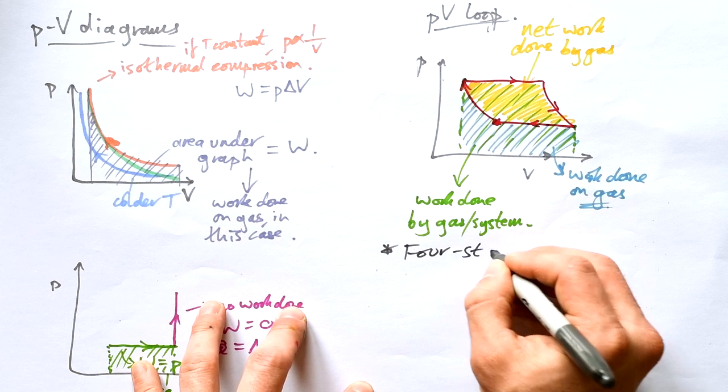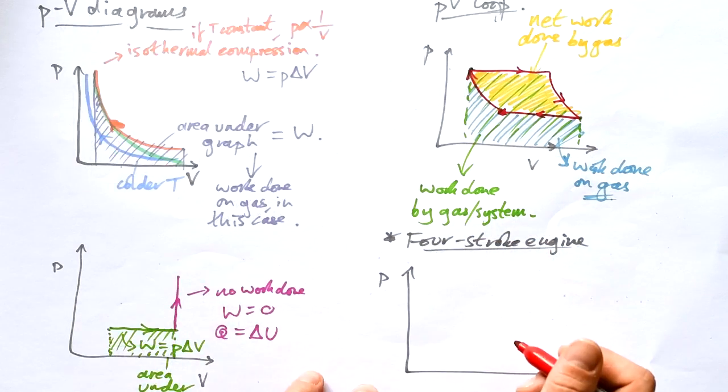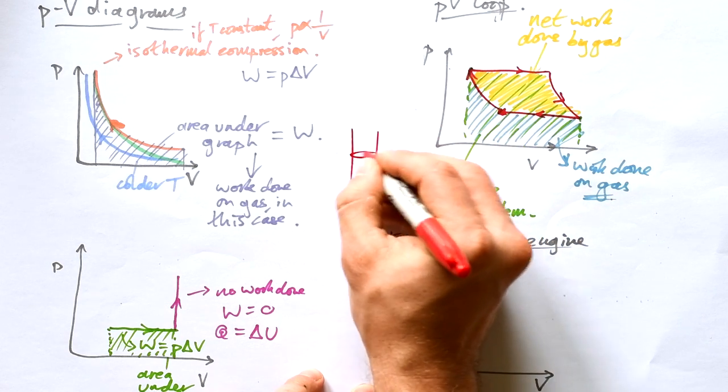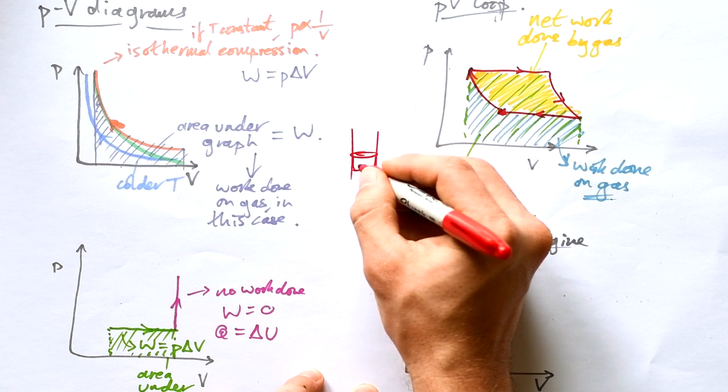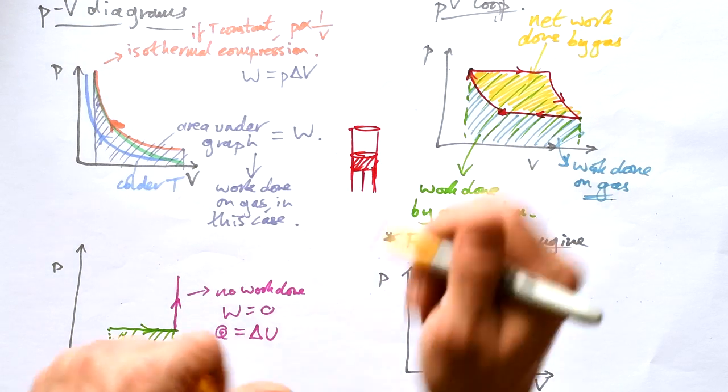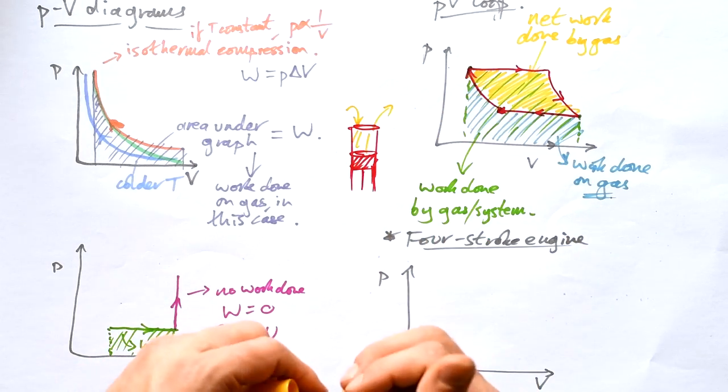We're going to look at specifically a four stroke engine. And that's usually what you have in your car. So what happens first of all is that you probably know what happens. You have a piston inside a cylinder and that goes up and down. And what you can do is that you can suck in air and then you can exhaust the fumes out as well.